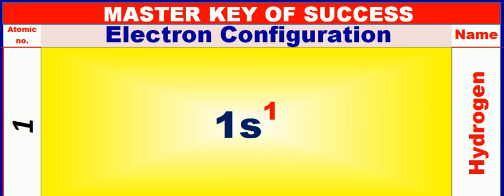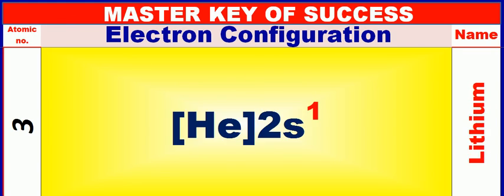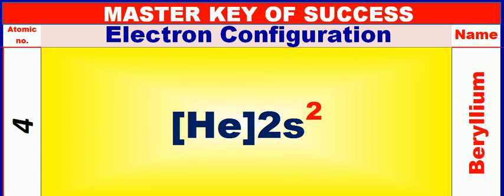Atomic number is 1 and name of atom is Hydrogen. Atomic number is 2 and name of atom is Helium. Atomic number is 3 and name of atom is Lithium. Atomic number is 4 and name of atom is Brillium.